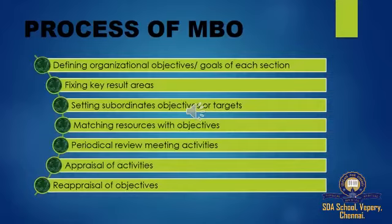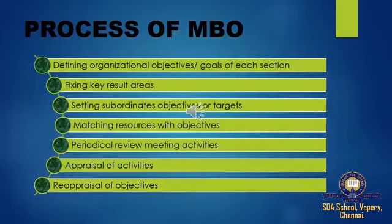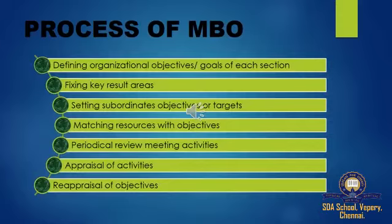The fifth point is matching resources with objectives. The objectives are framed on the basis of the availability of resources. For example, if a company has 100 computers but only 5 employees, or 200 employees but only 5 systems, the objectives cannot be fulfilled. Resources — whether raw material, persons, or labor — must be matched with the objectives we are framing.